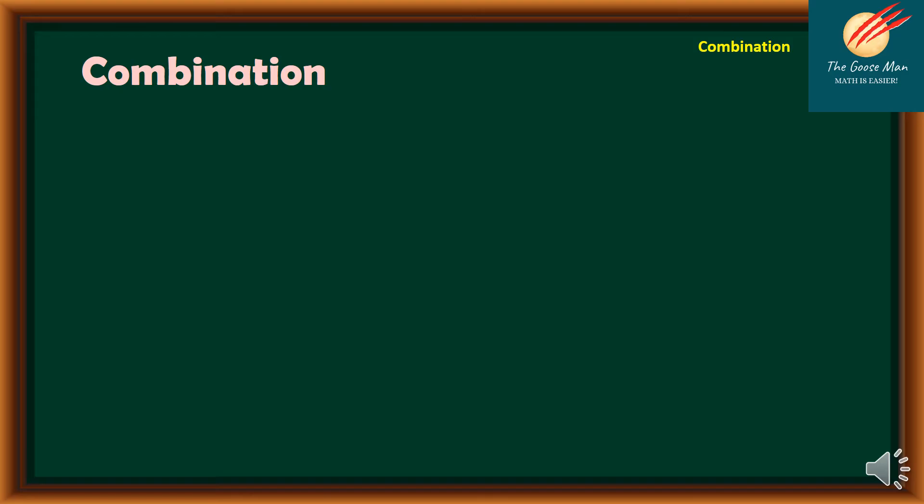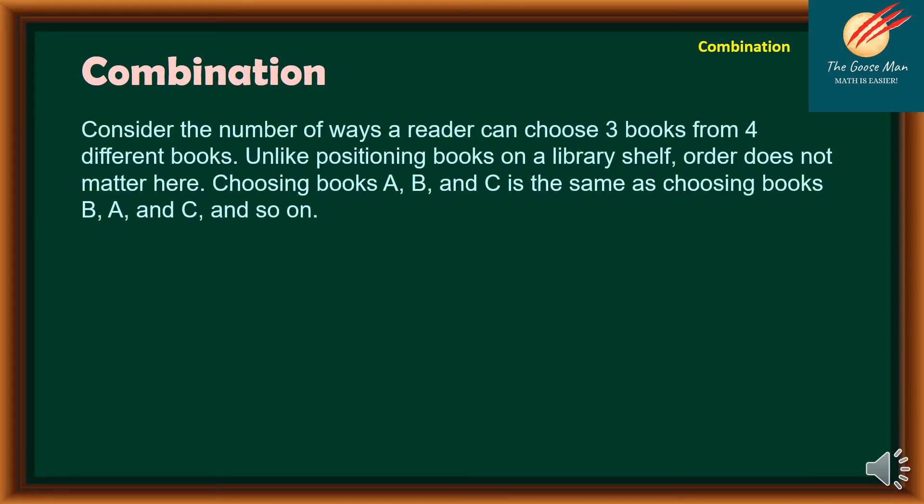To illustrate combination, consider the number of ways a reader can choose three books from four different books. Unlike positioning books on a library shelf, order does not matter here. Choosing books A, B, and C is the same as choosing books B, A, and C, and so on.